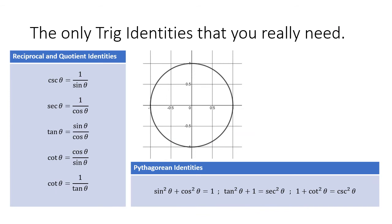There's something called trig identities. I promise you that you're going to hate them, but I also promise you it's not a big deal. There are only the ones on this page that you should consider committing to memory. The ones in this box should be no surprise: cosecant of theta is 1 over sine of theta; secant of theta is 1 over cosine of theta; tangent of theta is sine theta divided by cosine theta; cotangent of theta is cosine divided by sine; and cotangent of theta is 1 over tangent of theta. These are called reciprocal identities and quotient identities. An identity is just a statement of equality between two different things, which we can use for substitution to simplify complex expressions.